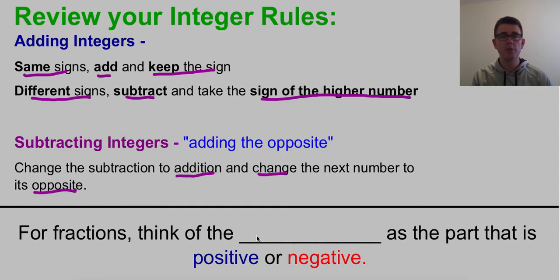Here's the part that applies to fractions. For fractions, think of the numerator as the part that is either positive or negative. You're going to see a negative in front of a fraction. I want you to just think of that negative as going with the numerator because that's the part that's actually going to be doing some work in these calculations.